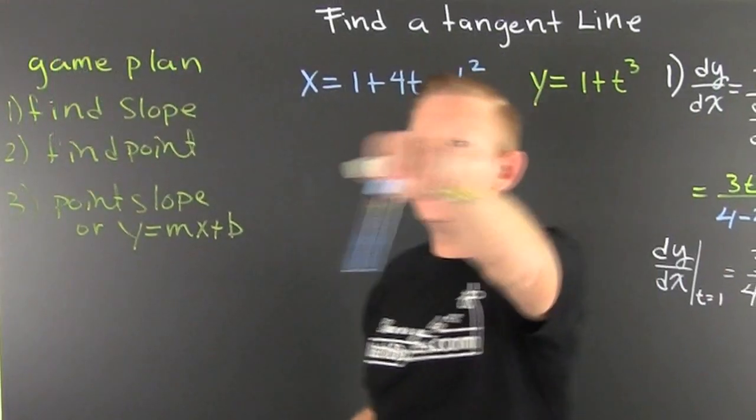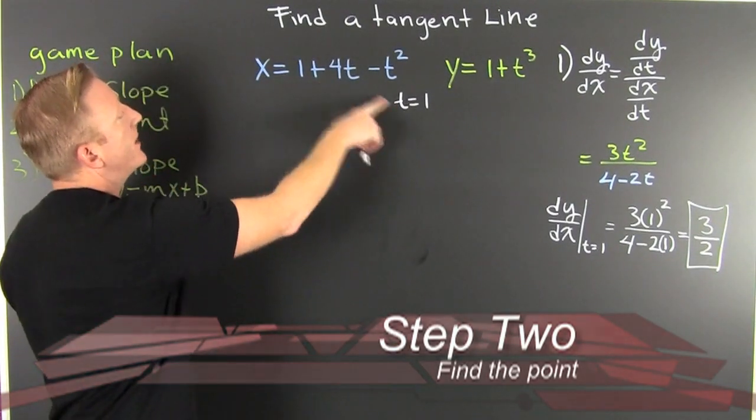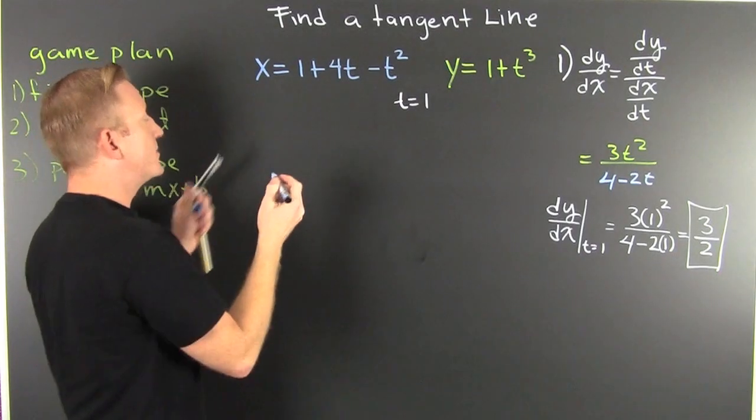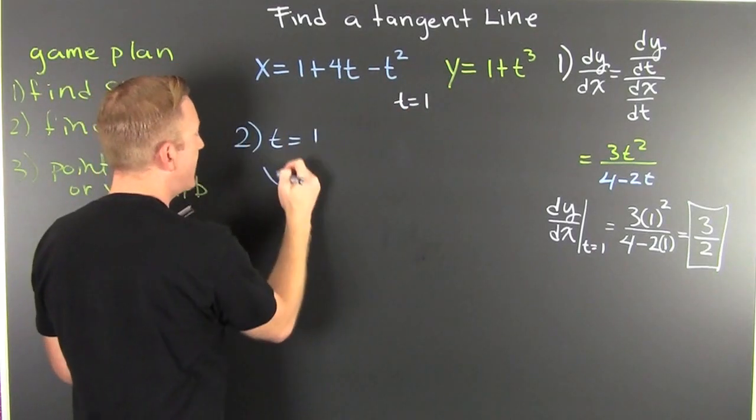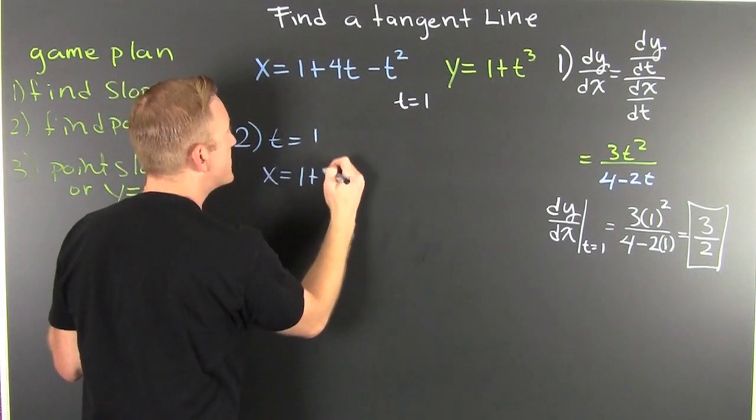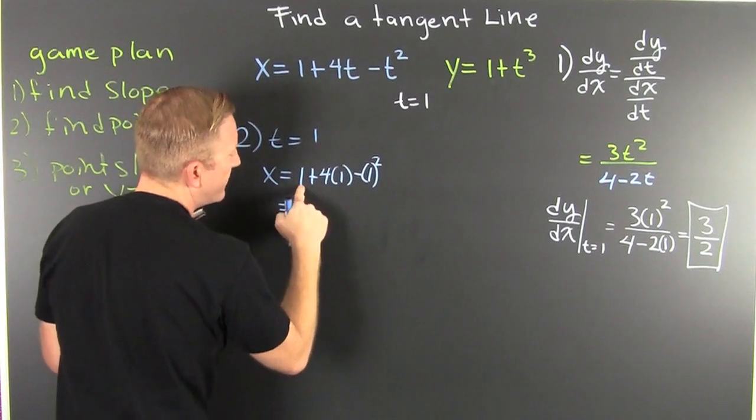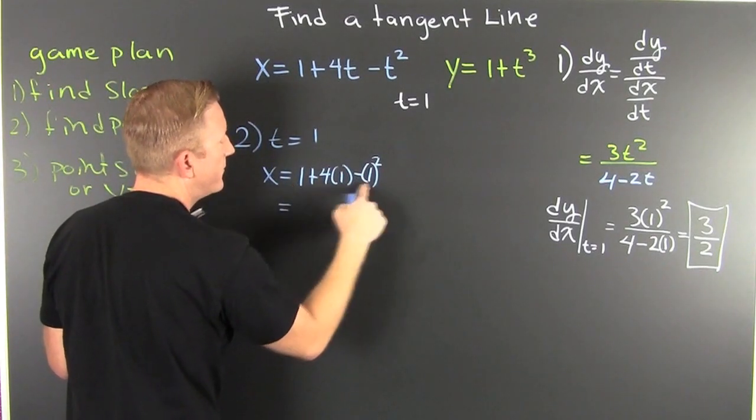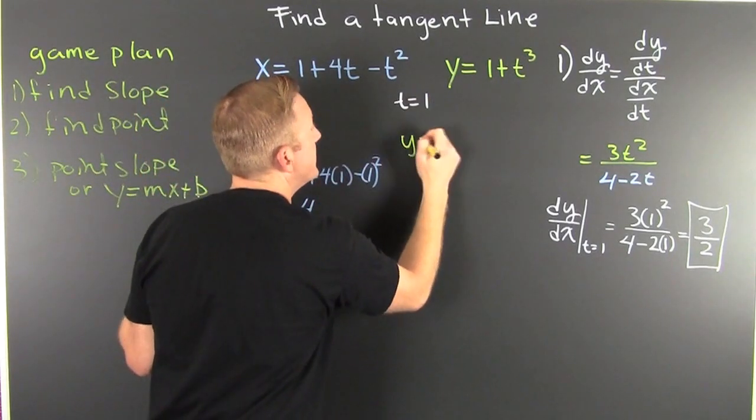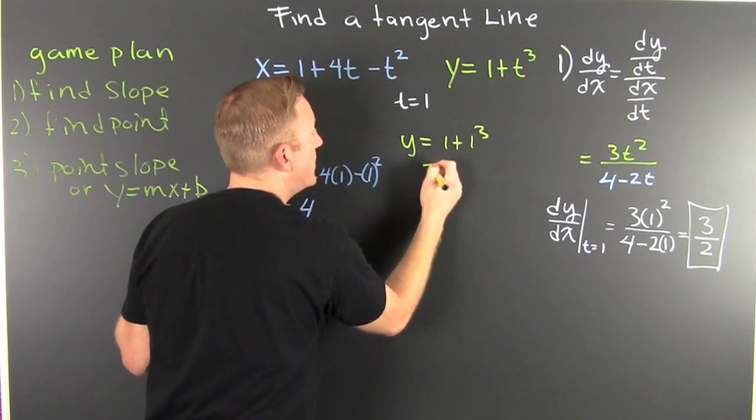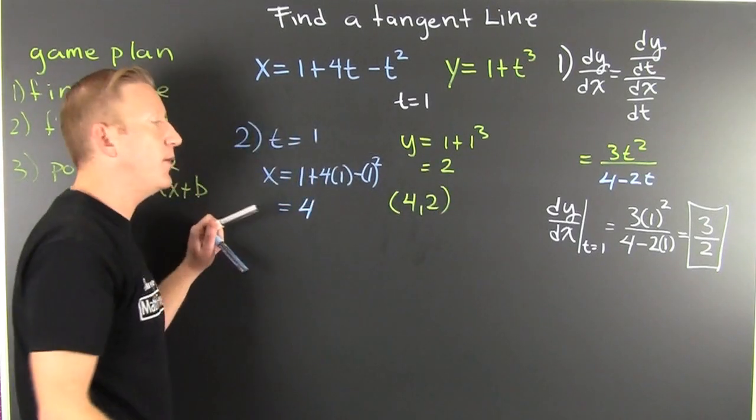Now that we found the slope, we need to entertain step 2 of our game plan. We need to find a point. My point is I'm going to evaluate both of those functions at t is equal to 1. So step 2. When t is equal to 1, we plug that into the x value. x is 1 plus 4 times 1 minus 1 squared. And that's 4. So x is 4. Now let's get y. y is equal to 1 plus 1 to the third. So I heard that y is going to be 2. So my new point is 4, 2. That's my x value and my y value.